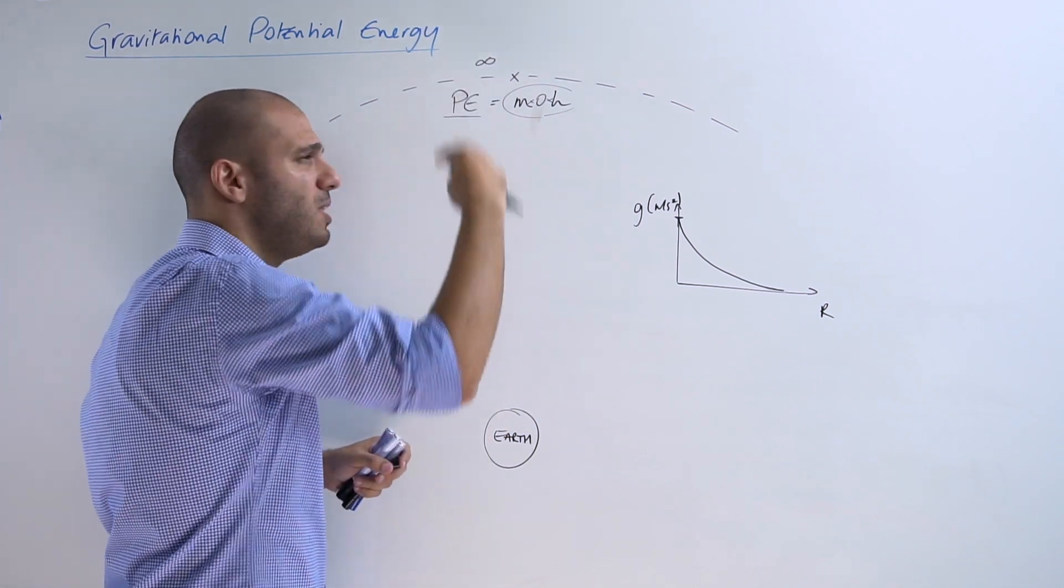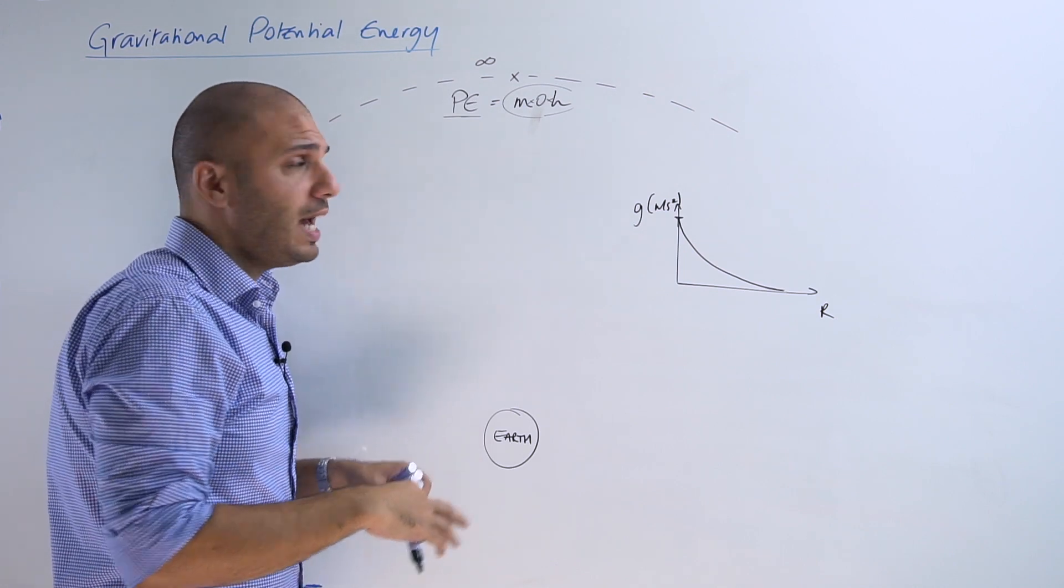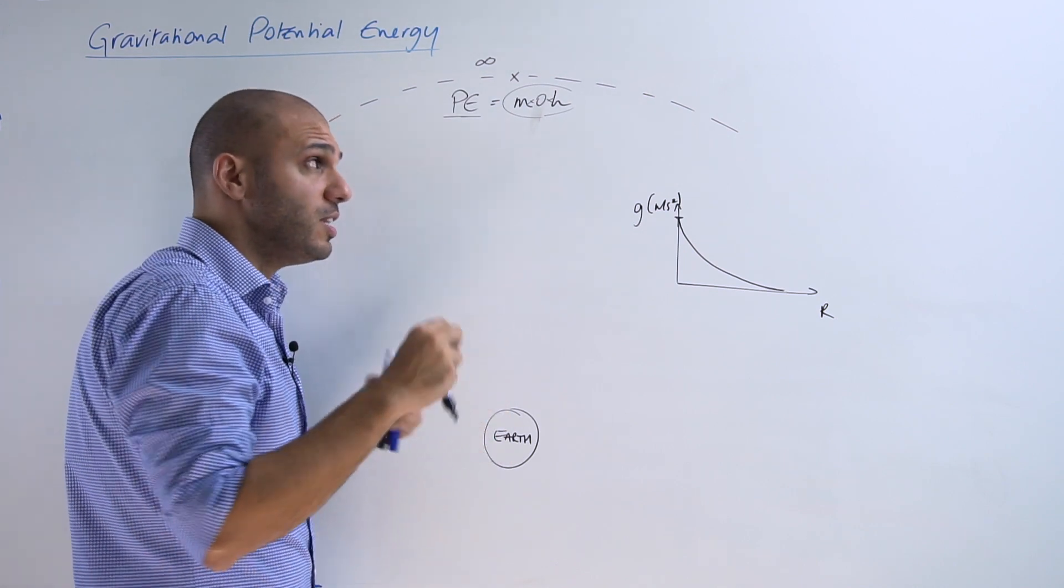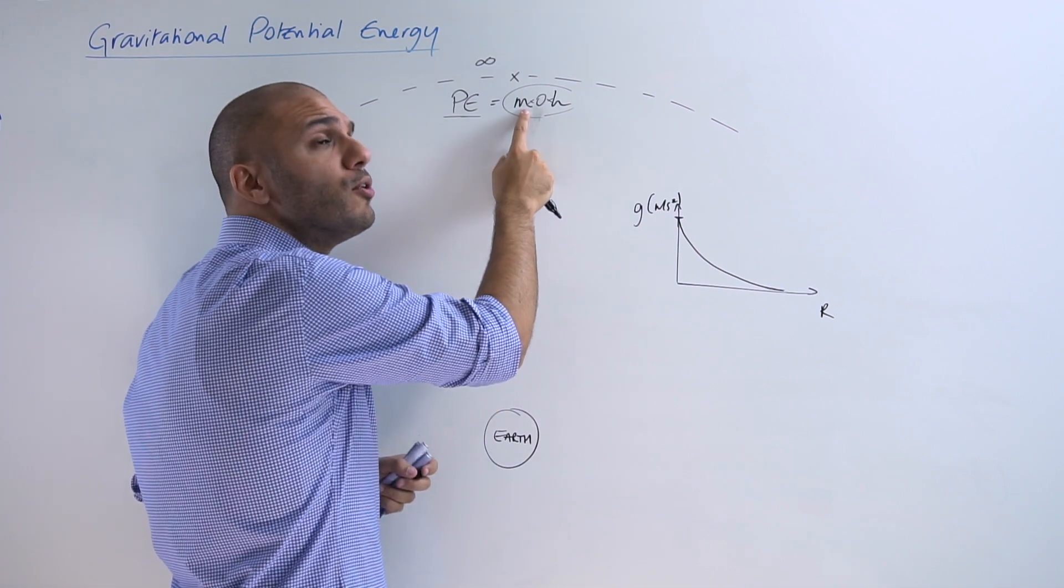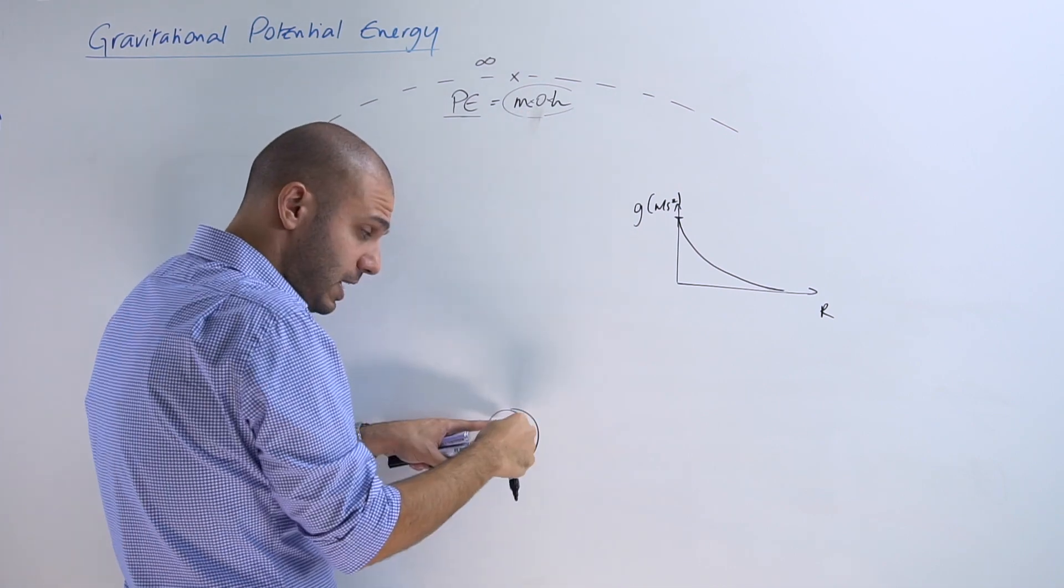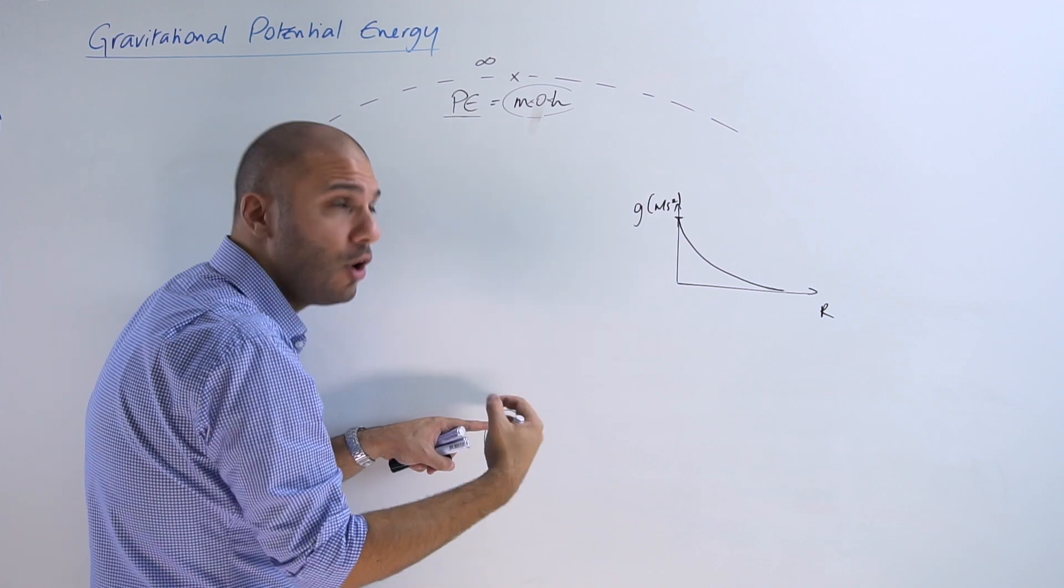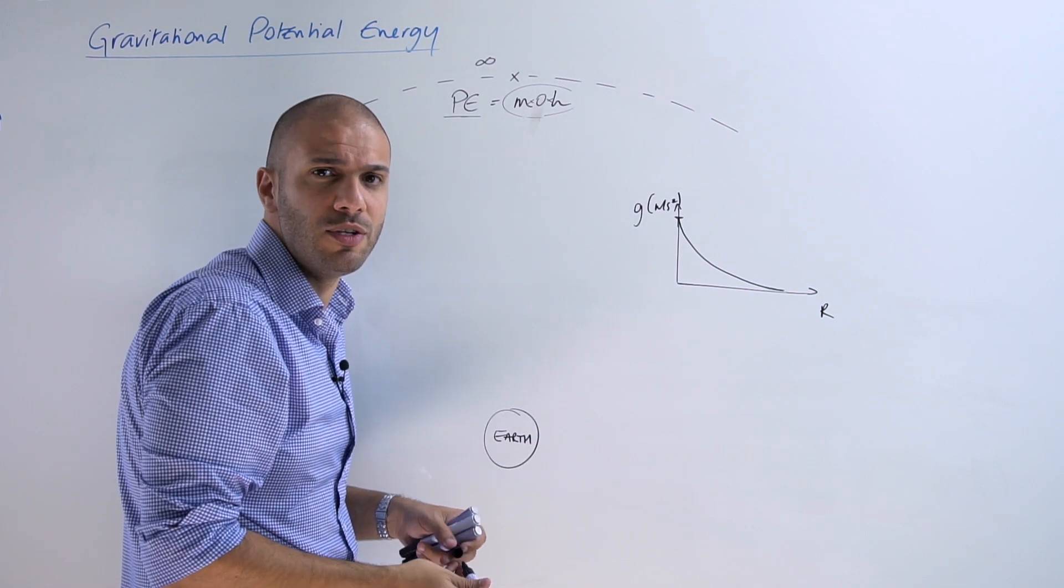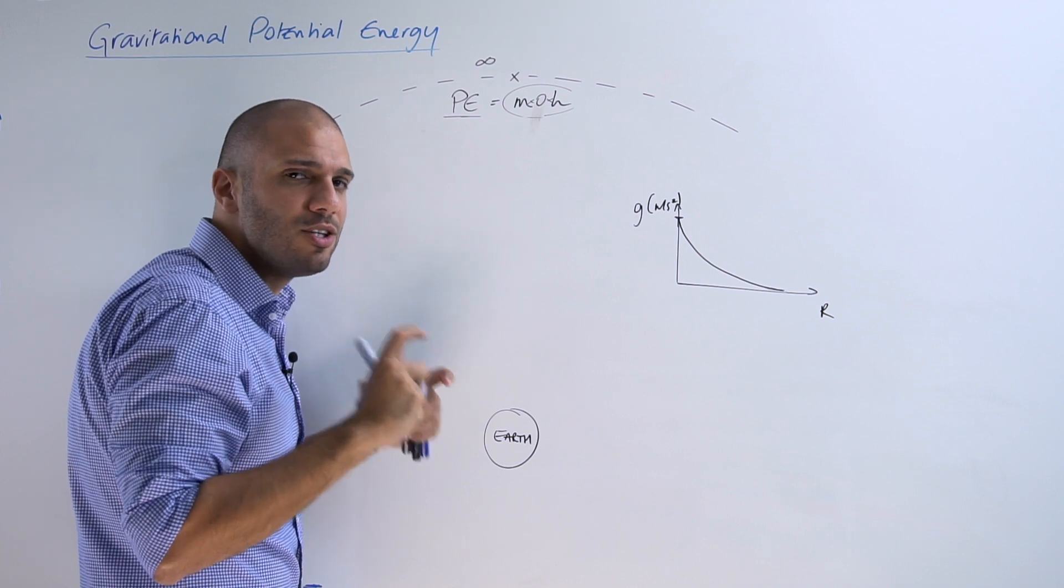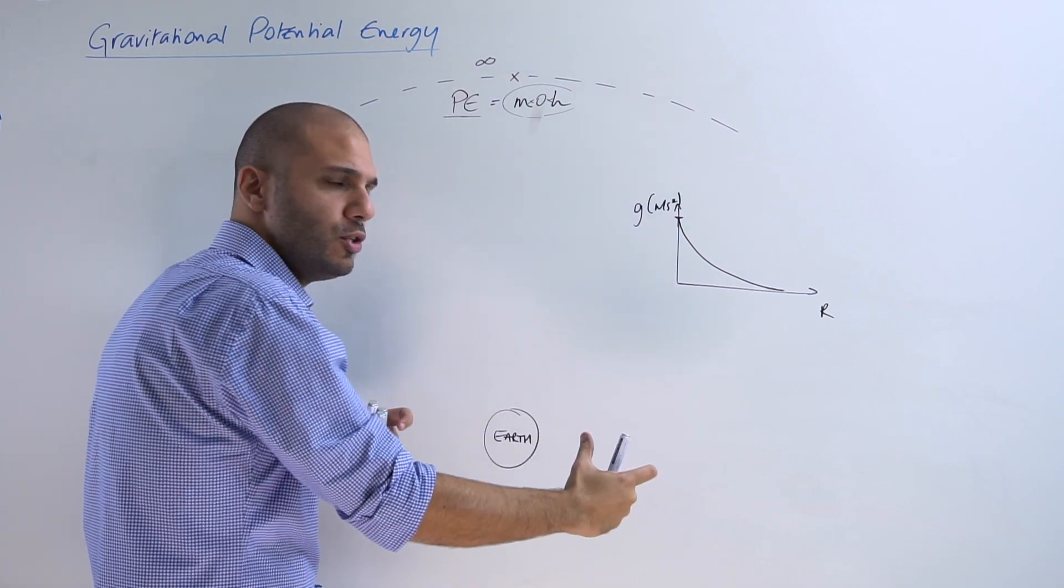And this is very convenient just because the actual force on the object, the pull from Earth on the object, is also approaching zero. So this is one major difference between what you used to do in previous levels of physics to what you will be doing now within gravitation.